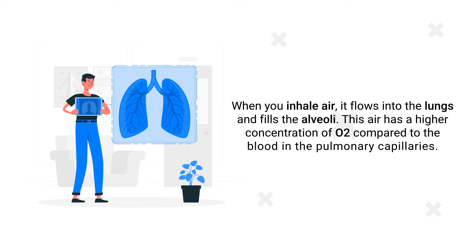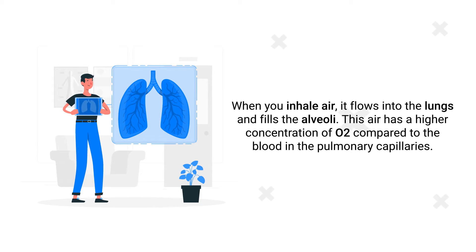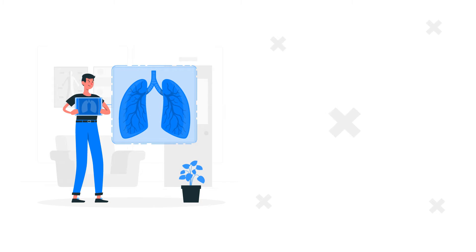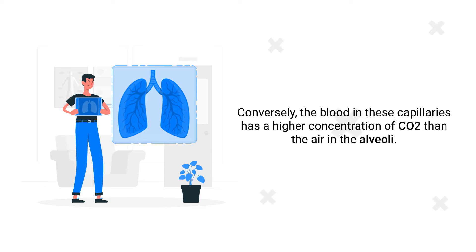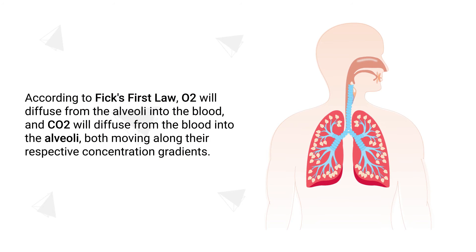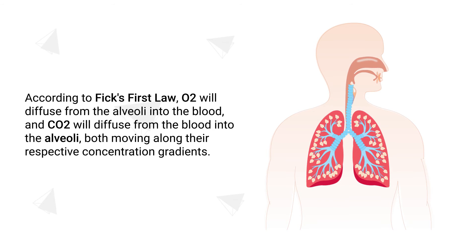When you inhale air, it flows into the lungs and fills the alveoli. This air has a higher concentration of oxygen compared to the blood in the pulmonary capillaries. Conversely, the blood in these capillaries has a higher concentration of carbon dioxide than the air in the alveoli. According to Fick's first law, oxygen will diffuse from the alveoli into the blood and carbon dioxide will diffuse from the blood into the alveoli, both moving along their respective concentration gradients.